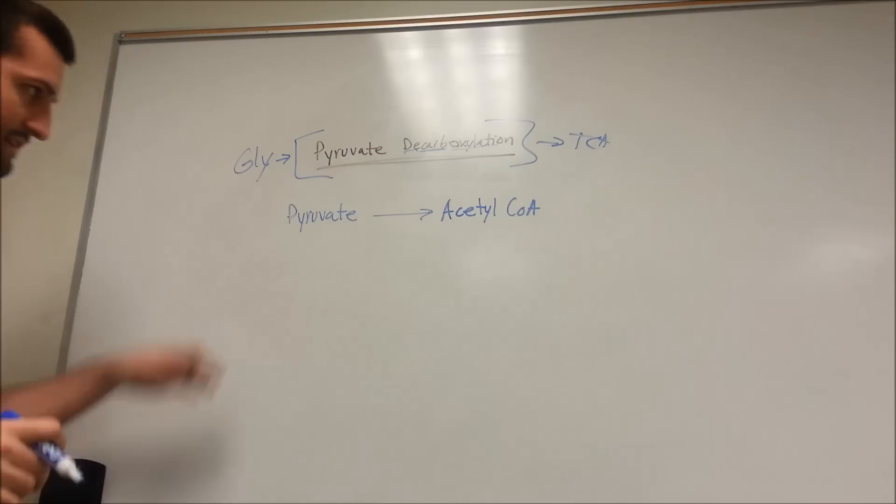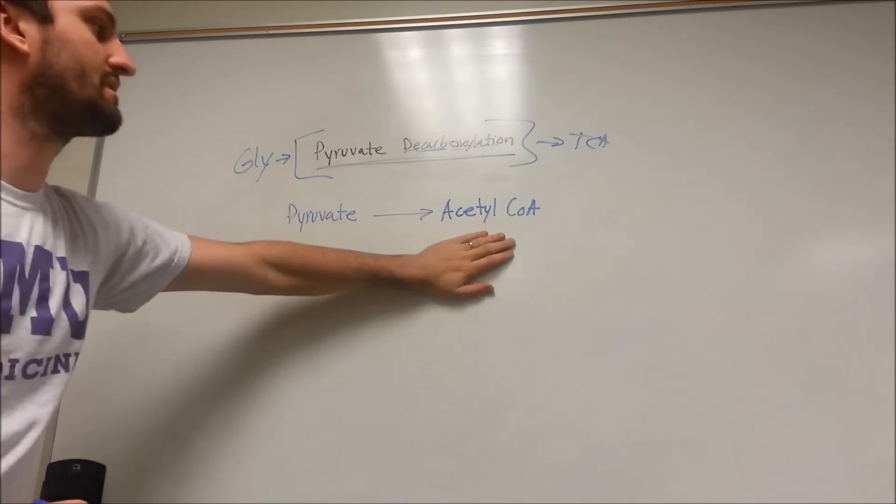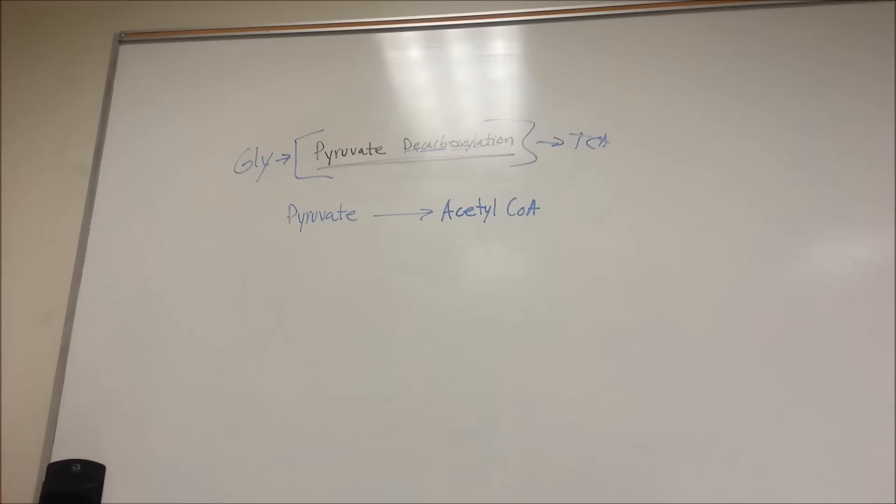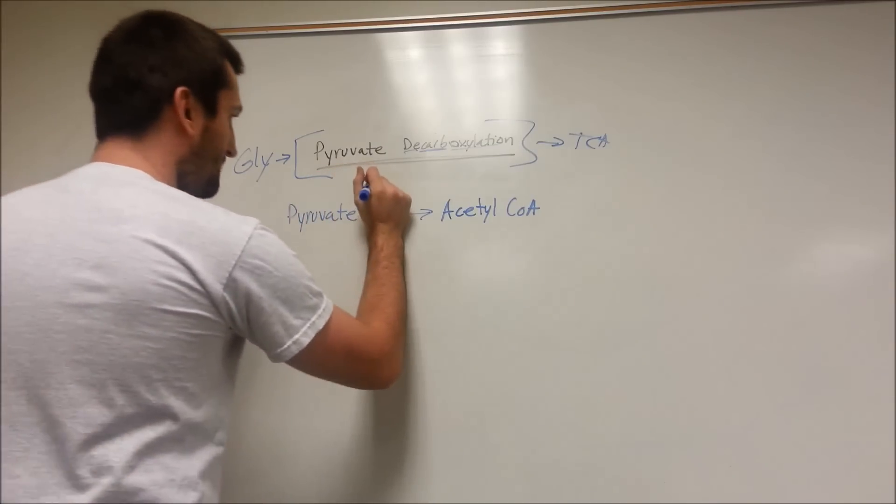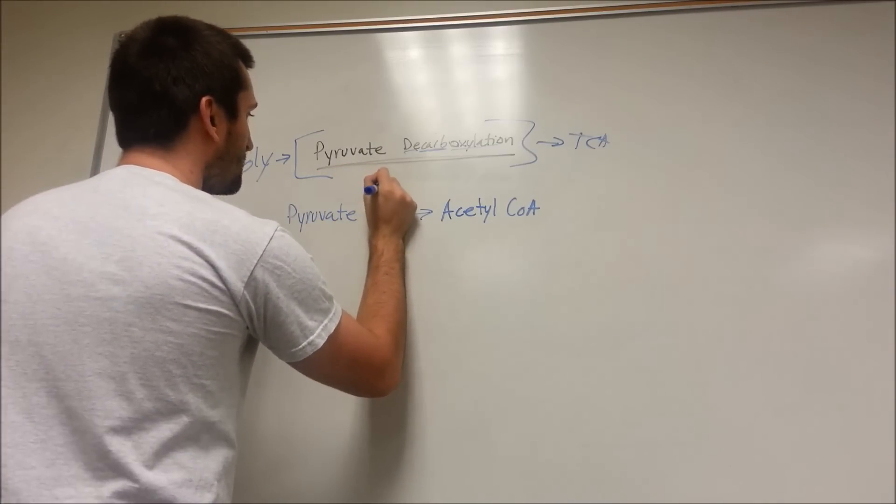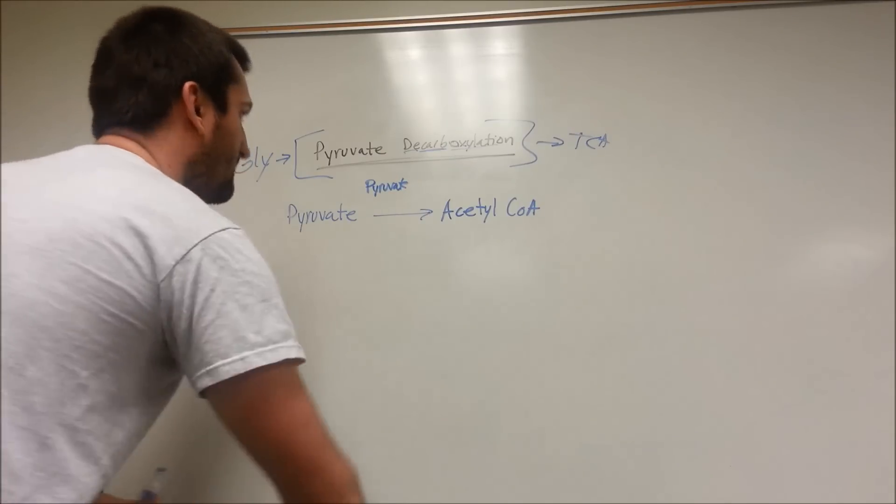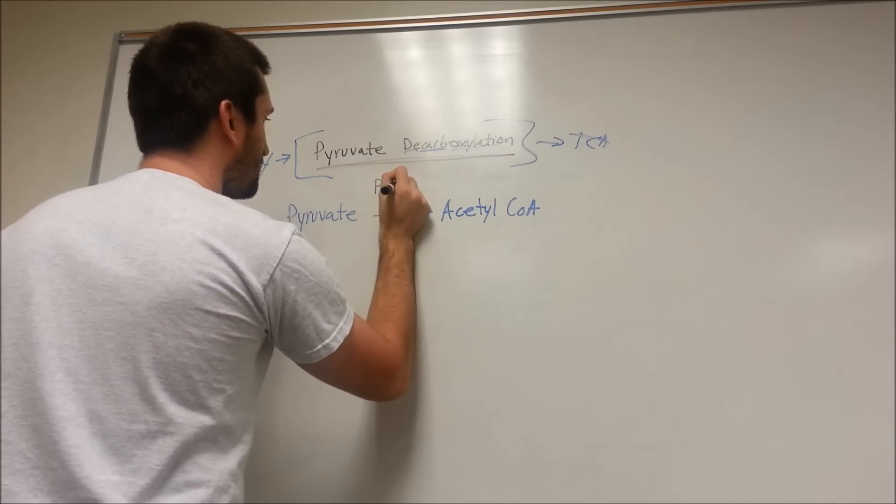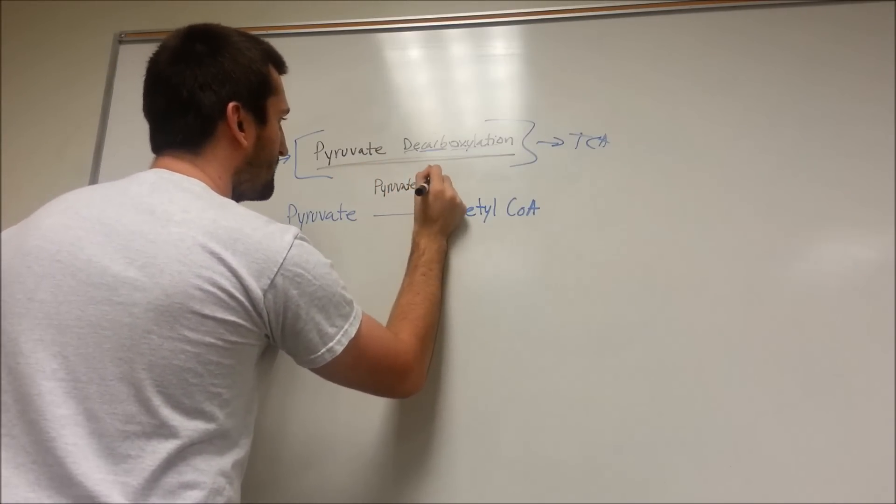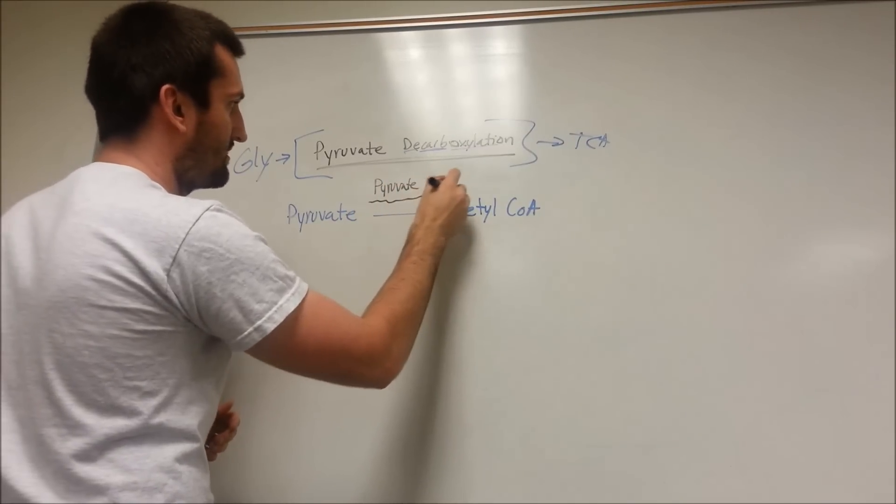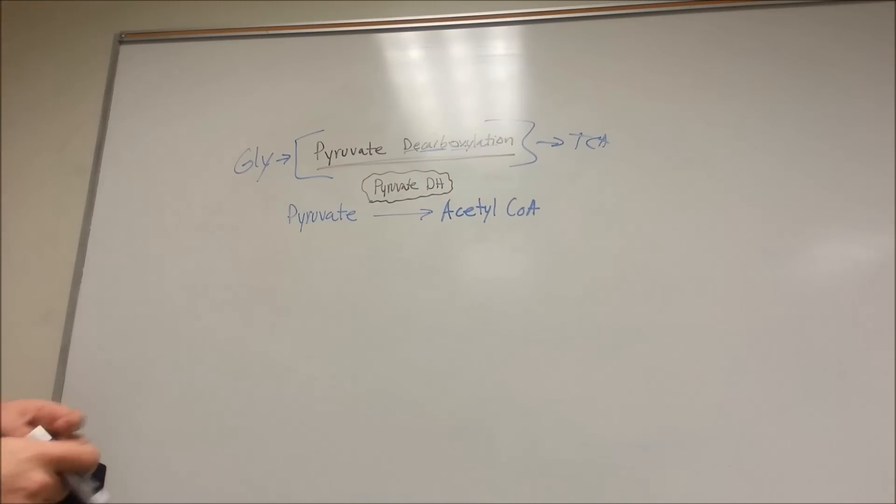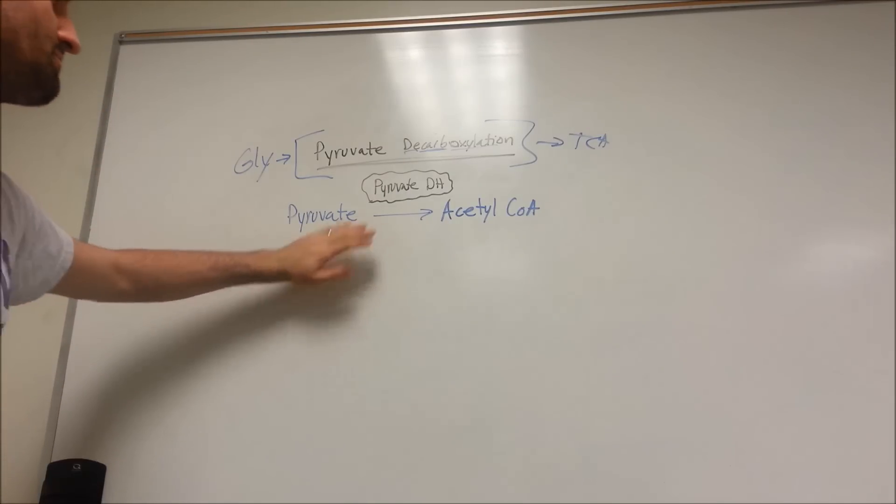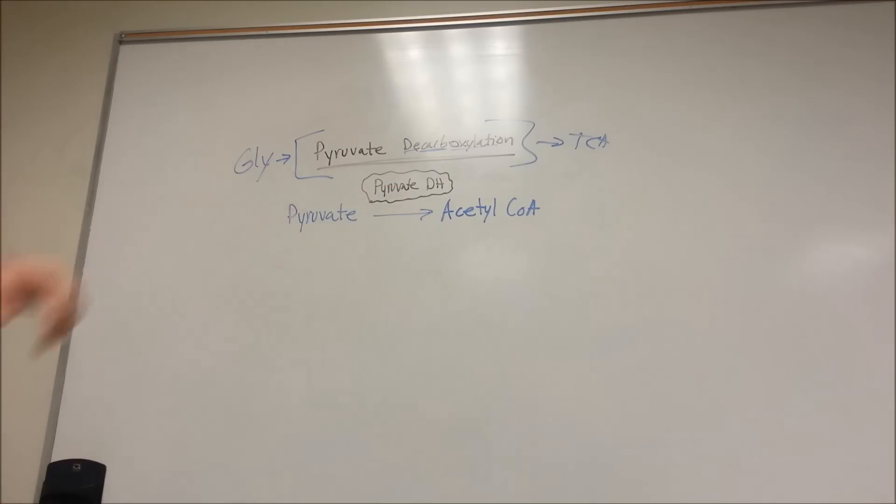It occurs in the mitochondrial matrix. You take a pyruvate molecule. We're going to convert it into an acetyl-CoA. This is awesome. So what enzyme are we going to use? I'm going to get a different color, actually. We are going to use pyruvate dehydrogenase. DH dehydrogenase. You can't get much more high yield than that. This is a great question right here. What enzyme converts pyruvate to acetyl-CoA? Pyruvate dehydrogenase.